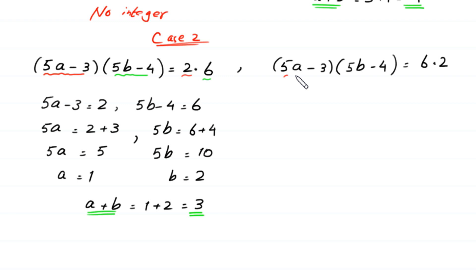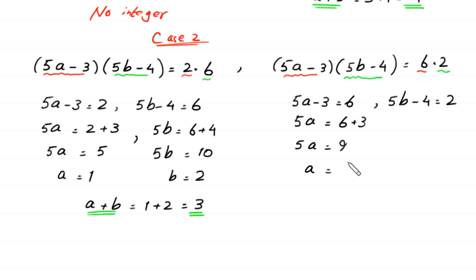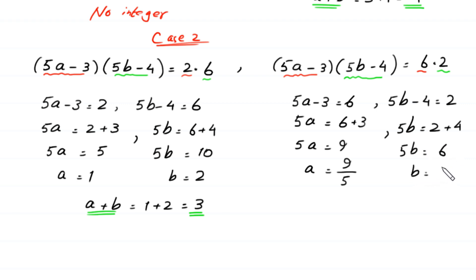From here we try 5A minus 3 equal to 6 and 5B minus 4 equal to 2. So 5A equals 9 and A equals 9 over 5. And 5B equals 6 and B equals 6 over 5. No integer solutions can be found from here.